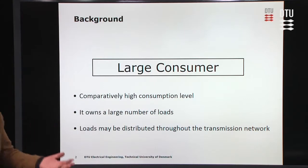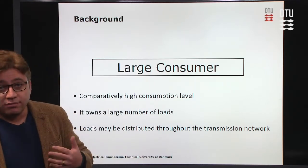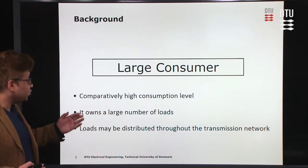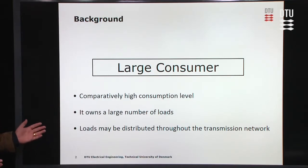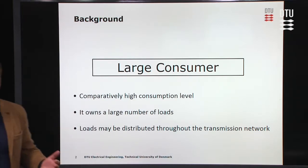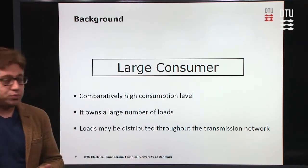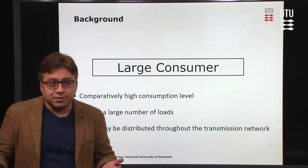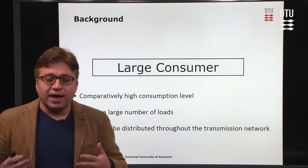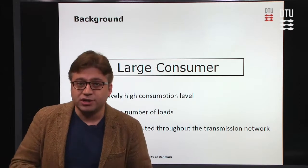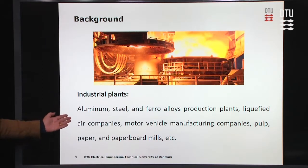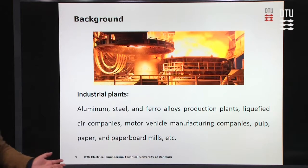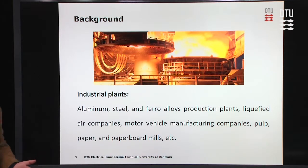When we talk about a large electricity consumer, we are talking about a consumer with a comparatively high consumption level. We assume that this large consumer may own a large number of loads, and these loads might be distributed throughout the transmission system. Some examples of large consumers in power systems could be aluminum or steel production plants, motor vehicle manufacturing companies, or any kind of large consumers that exist in power systems.